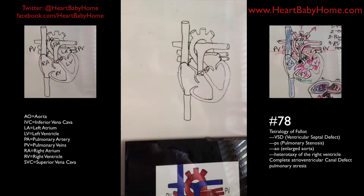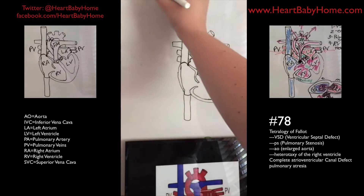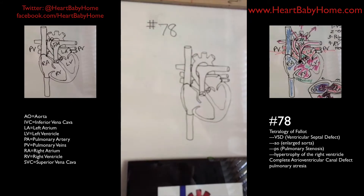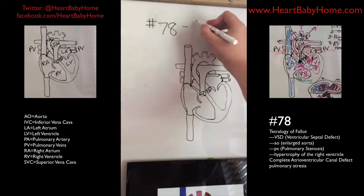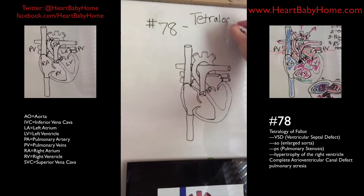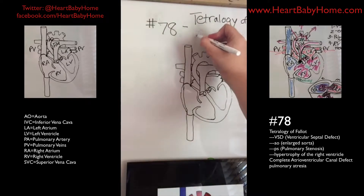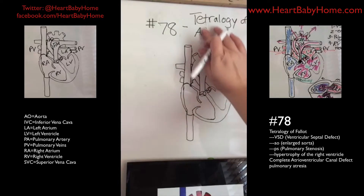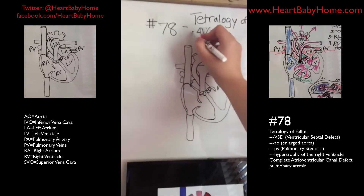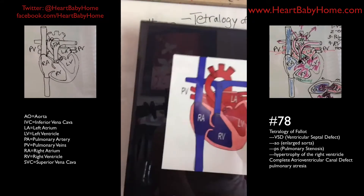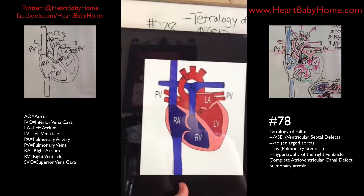Hey guys, it's Nanette with Heart Baby Home. Today we are looking at heart number 78. We have Tetralogy of Fallot as well as a complete atrioventricular septal defect, AVSD, and it's complete.